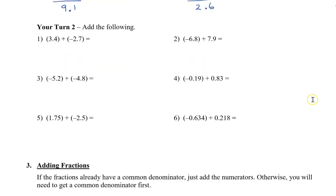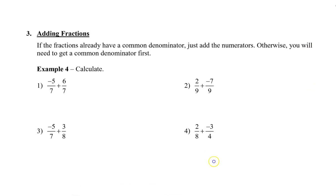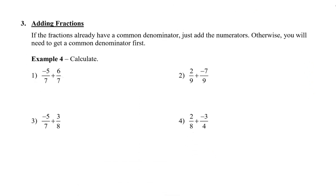Next we're going to take a look at adding fractions, also a type of rational number. If the fractions already have a common denominator, that's pretty straightforward — we just add the numerators. In the first two examples, we do have a common denominator; they're both 7. So we put 7 on the bottom and we have negative 5 plus 6, which gives us positive 1. So this first one is going to be 1 seventh.